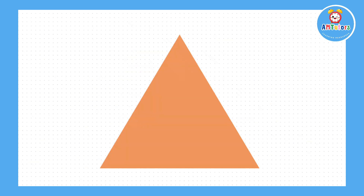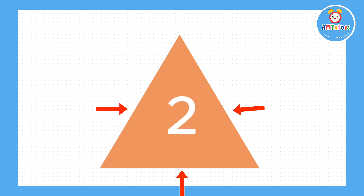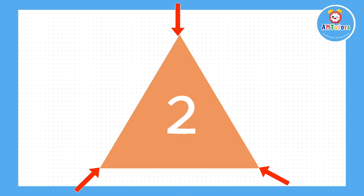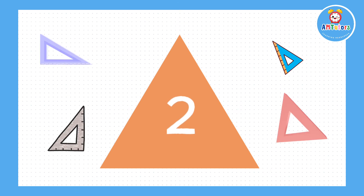The next shape is a triangle. A triangle has three sides and three corners. There are many different types of triangles.